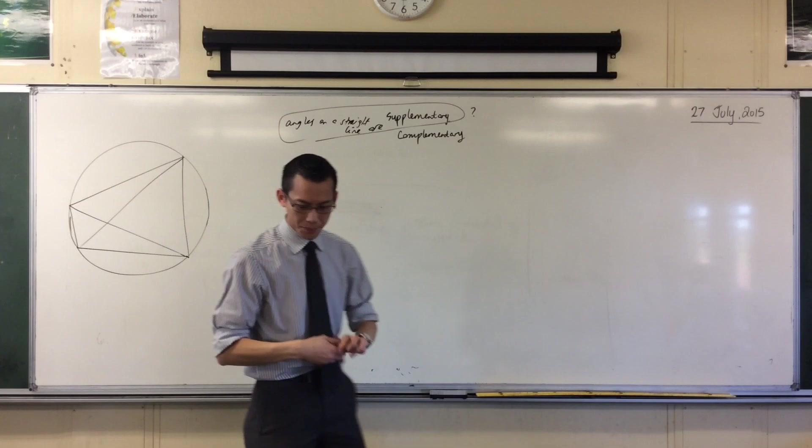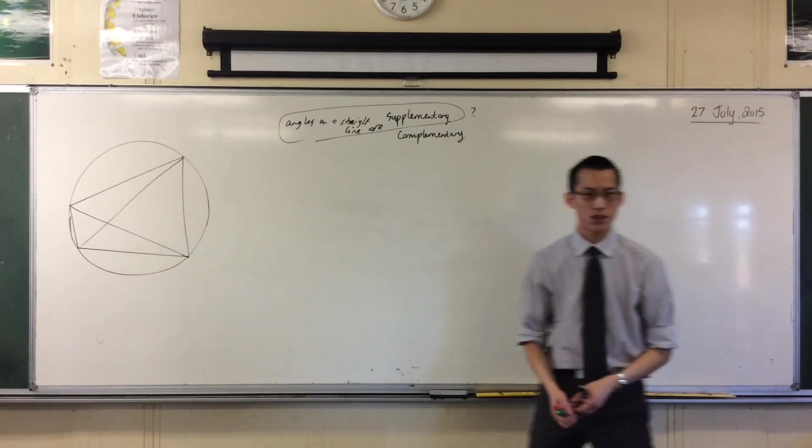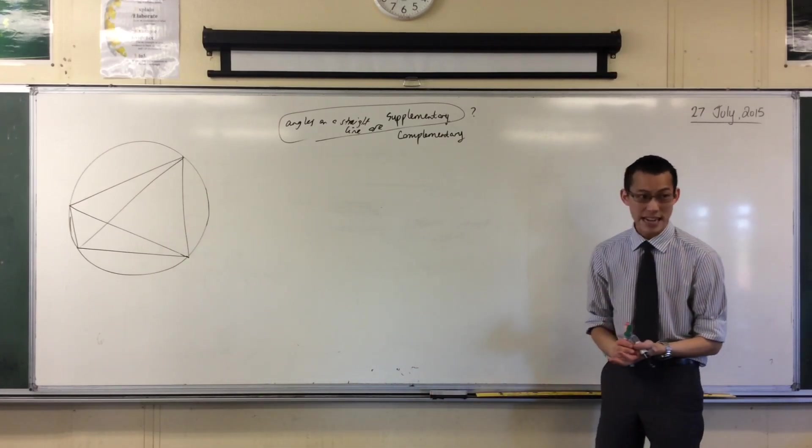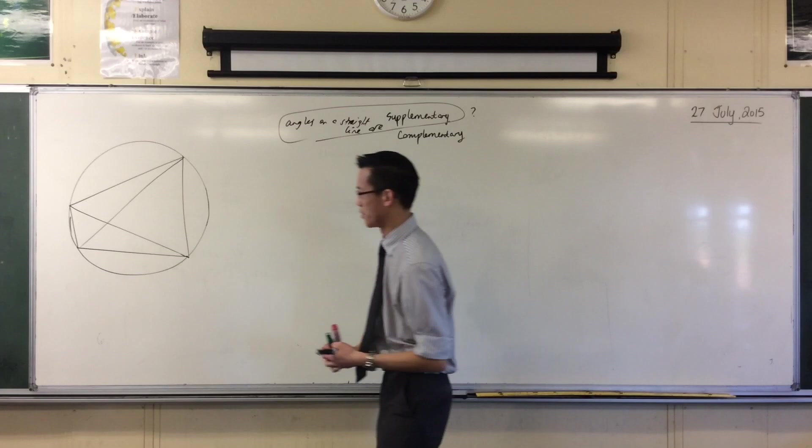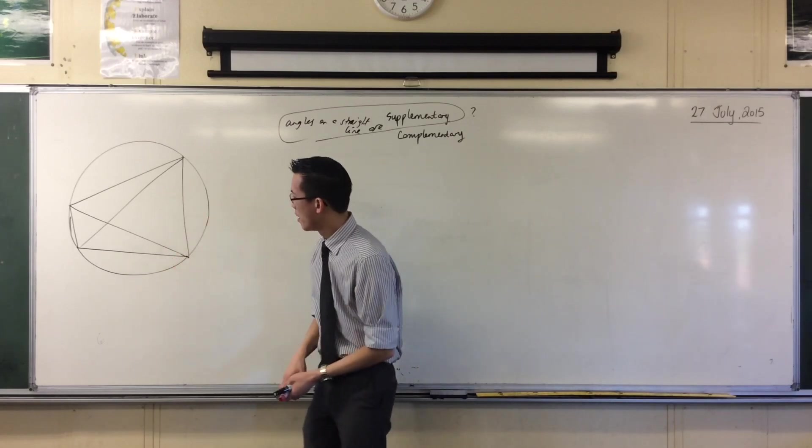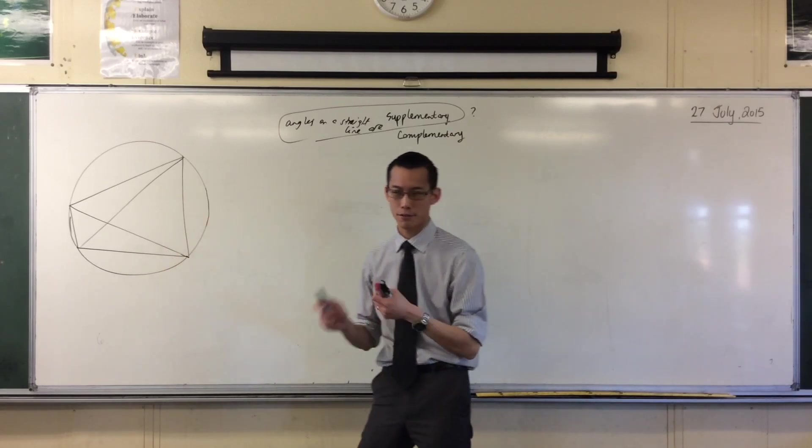Now, once you have your diagonals on there, you have a whole bunch of pairs of angles that are equal to each other. Loads and loads and loads. You just have to be able to see them, right? So for example, let's pull up our Greek alphabet here.